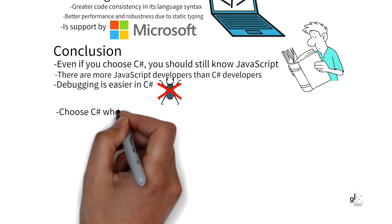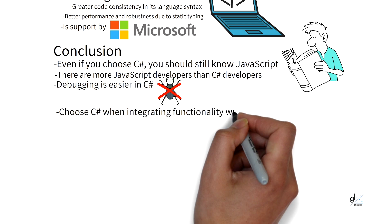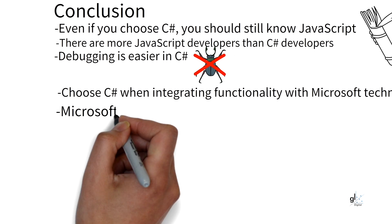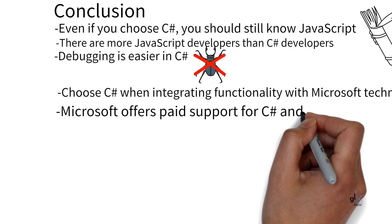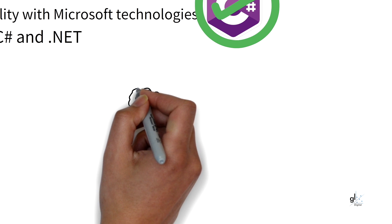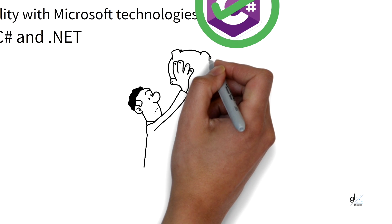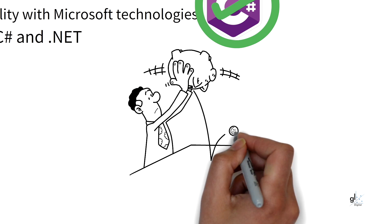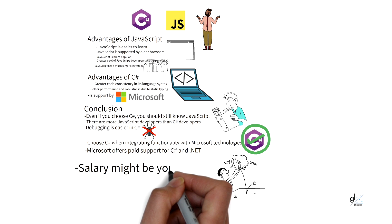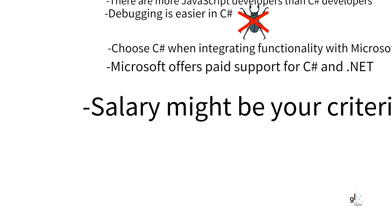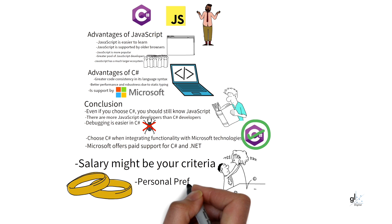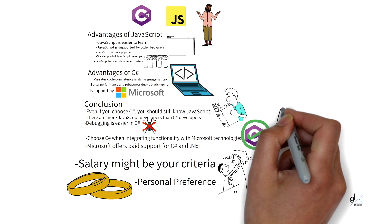If you are primarily using Microsoft technologies in your organization, .NET and C# will be much easier to integrate into your ecosystem than JavaScript technologies. Microsoft provides paid support, so for comprehensive and dependable support, C# and .NET may be a great investment. Salary might be your criteria, so it's a good idea to research what companies in your area pay C# and JavaScript developers. You may also simply prefer the look and feel of one technology over the other. If speed and performance is your main criteria, then C# and .NET is definitely the way to go.